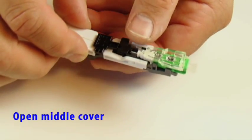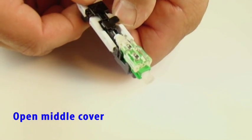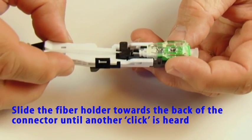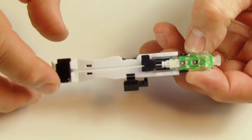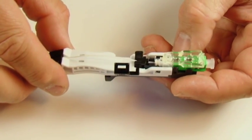Open middle cover. Again slide the fiber holder toward the back of the connector until another click is heard. This step should create a slight bowing of the fiber between the first and third covers.